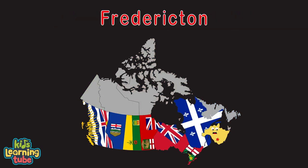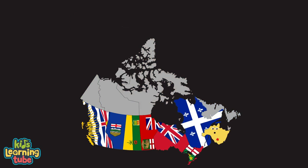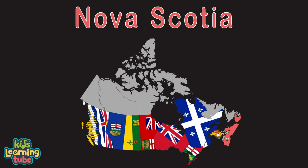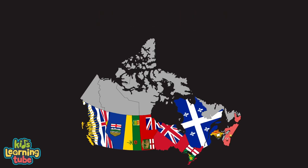I'm New Brunswick — my capital is Fredericton. I border the US state of Maine; my largest city is St. John. My Bay of Fundy is most famous for its extreme tides, and if you're into whale watching, that's where you'd want to reside. I'm Nova Scotia — my capital's Halifax. I'm one of Canada's maritime provinces in the Atlantic Ocean with long coastlines. I'm home to the puffin and seals.